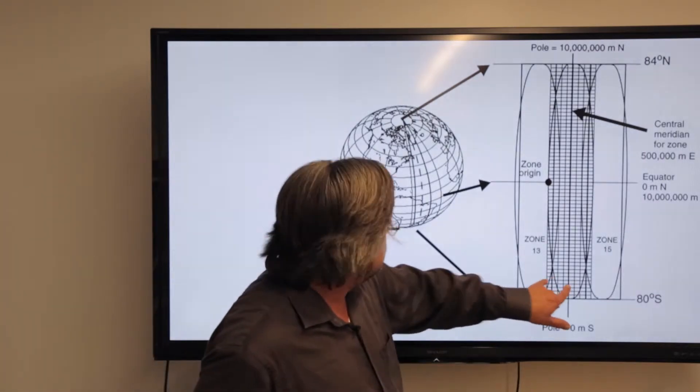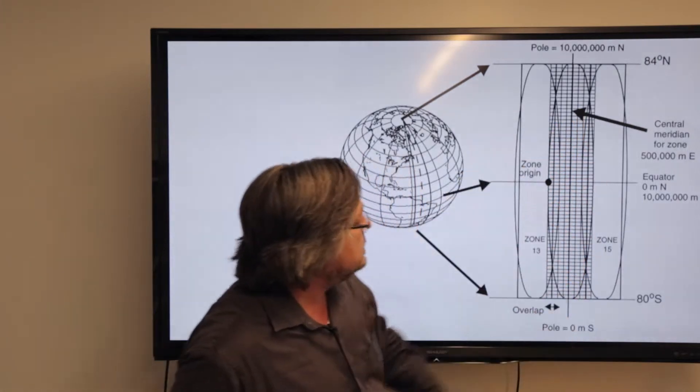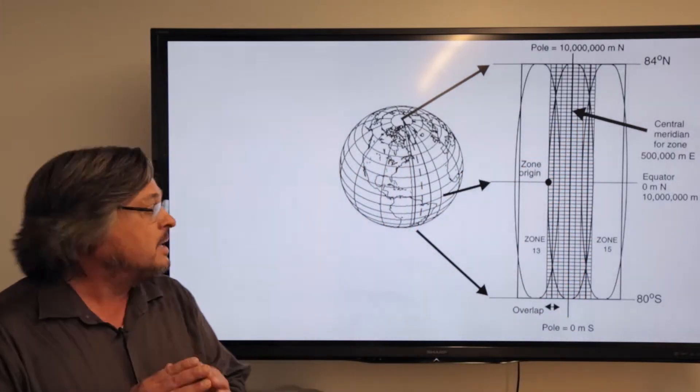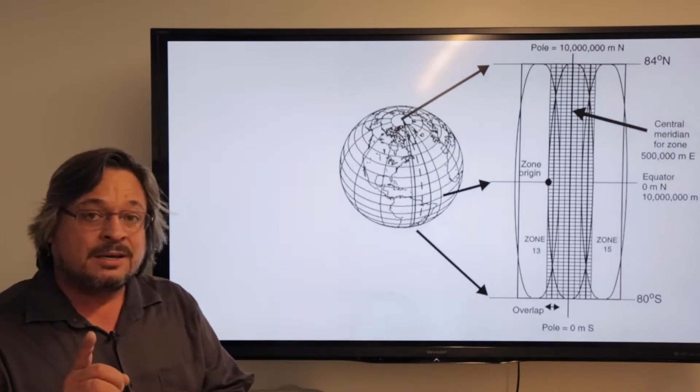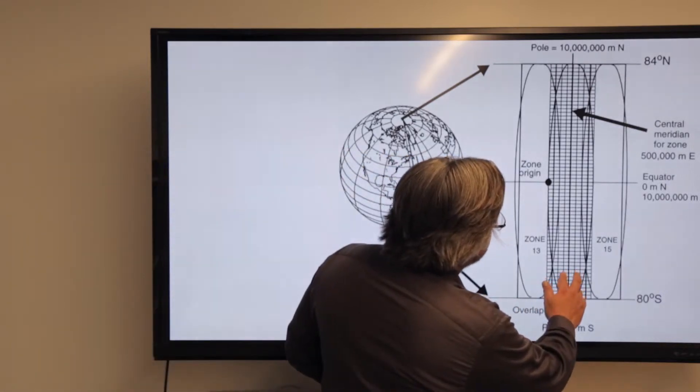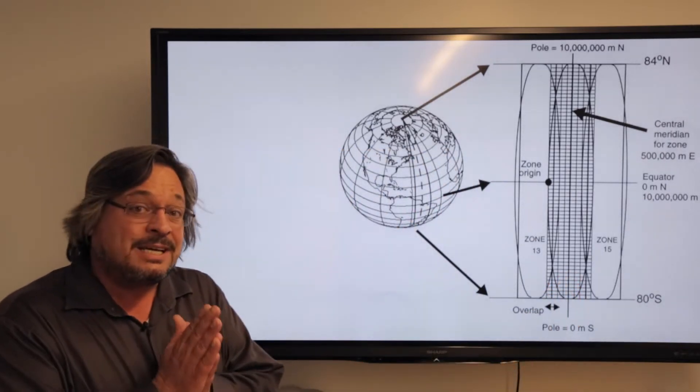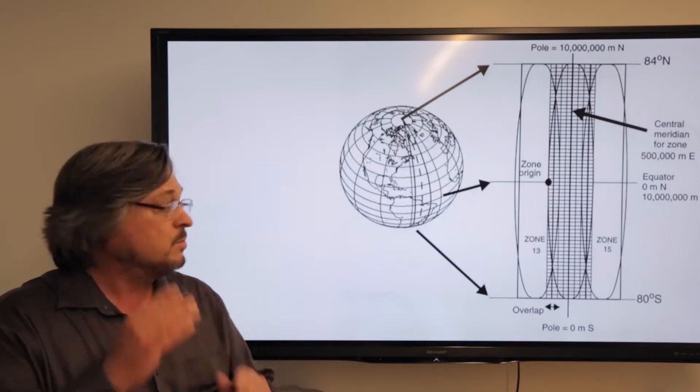We do zones throughout the world, but these strips within the zones, instead of just one standard line, have two. It does two standard lines just on either side of the central meridian, thus making it a secant projection, meaning that we're cutting through the world twice.